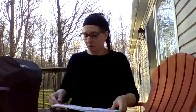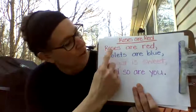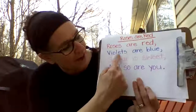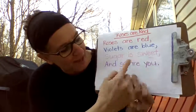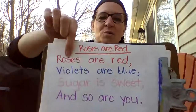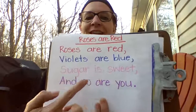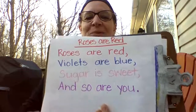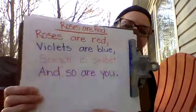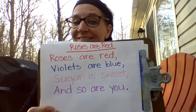Our nursery rhyme today is Roses are Red. I'll say it, then you say it — and you can track with your finger. Roses are red, violets are blue, sugar is sweet, and so are you. Your turn: roses are red, violets are blue, sugar is sweet, and so are you. See if you can find words or letters that you know. Bye friends, happy Wednesday!